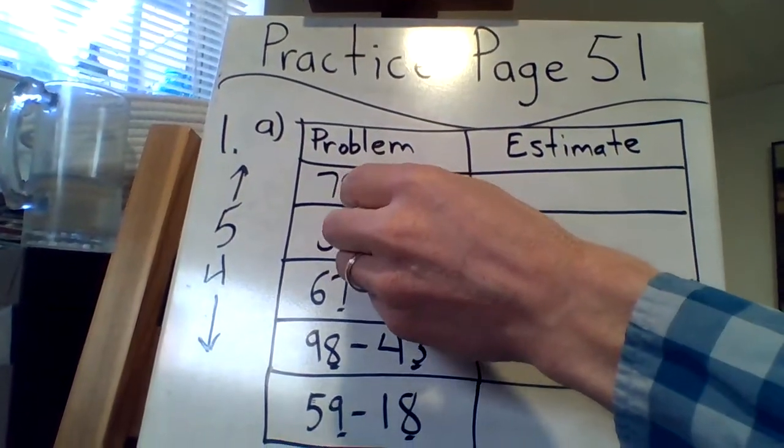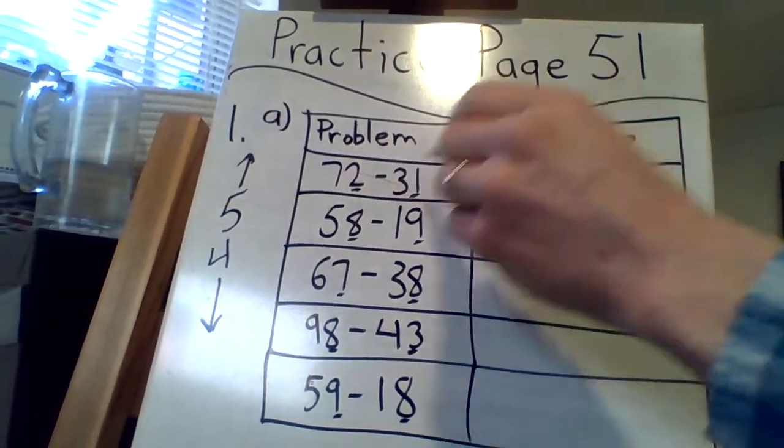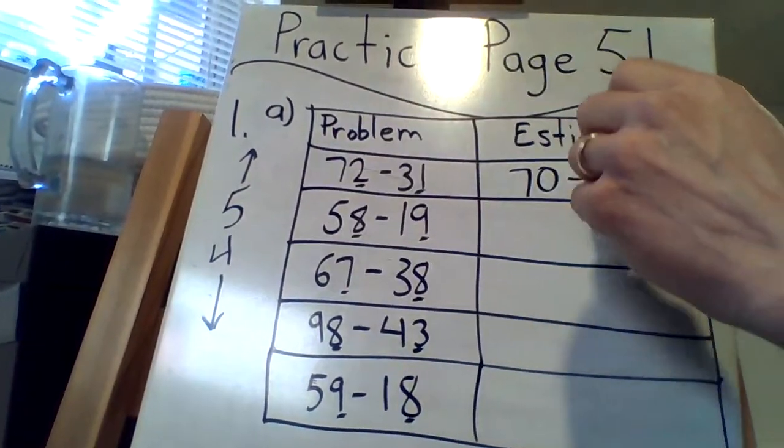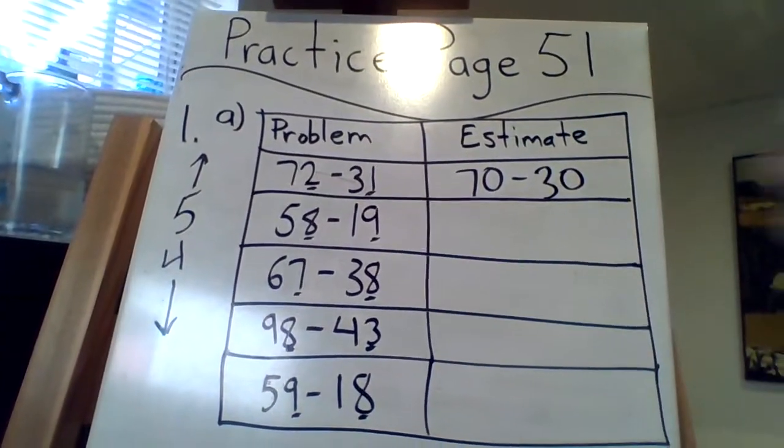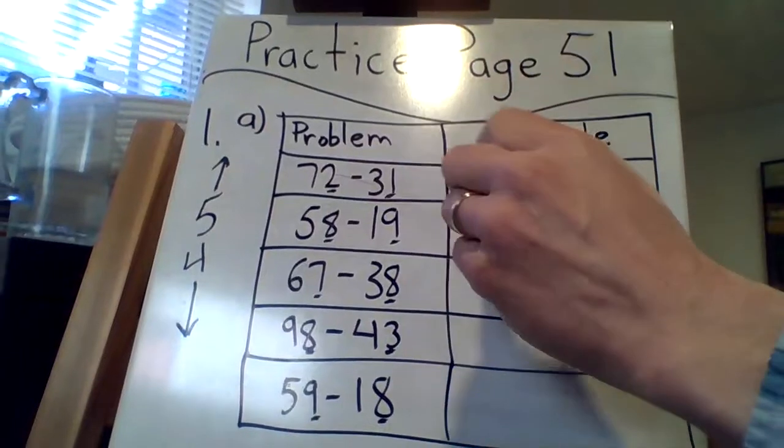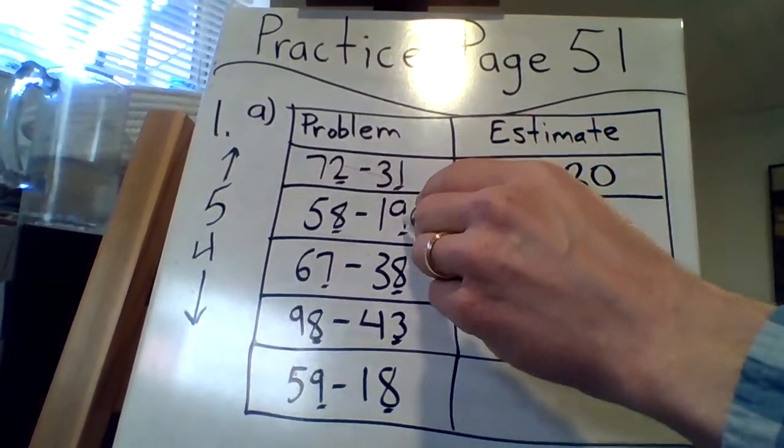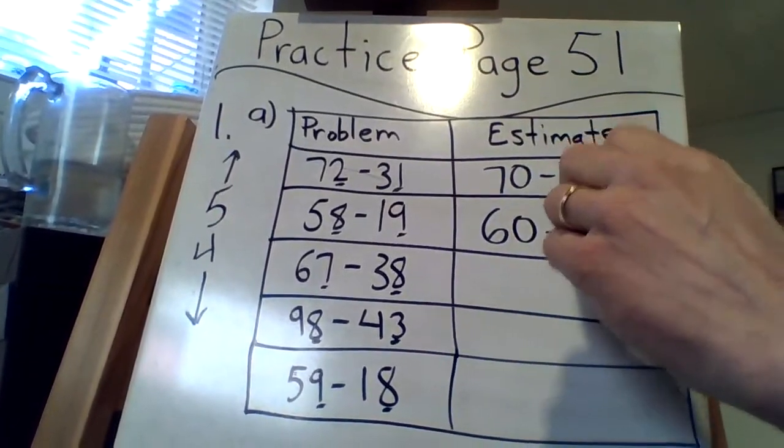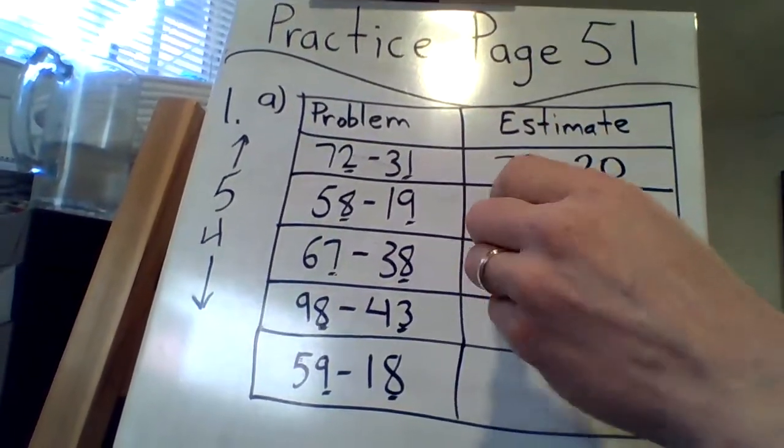Okay 72 means we round down so it's still 70. 31 means we round down so it's still 30, there you go. Simple as that. 58 up to 60, minus 19 up to 20.